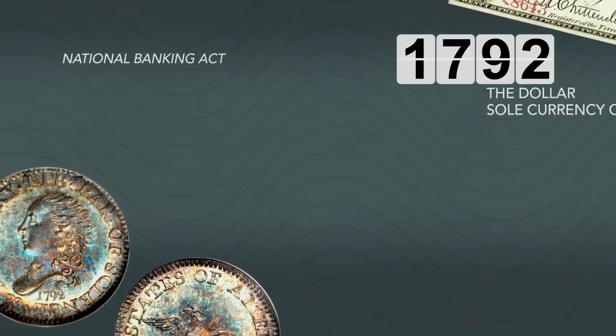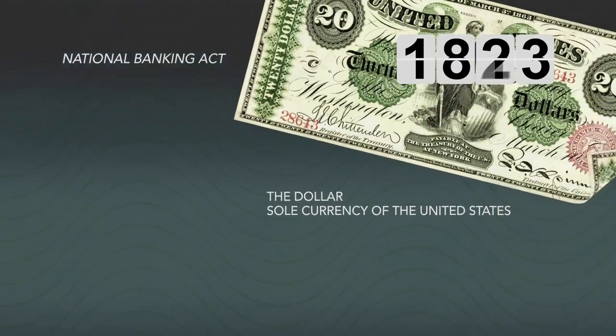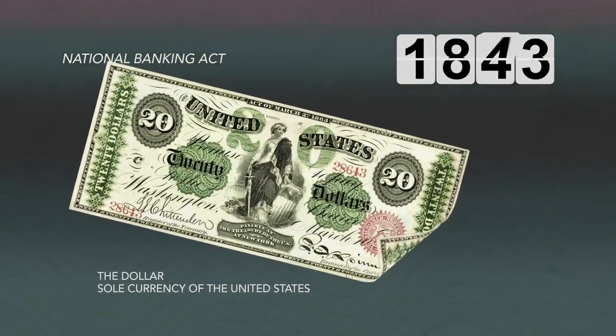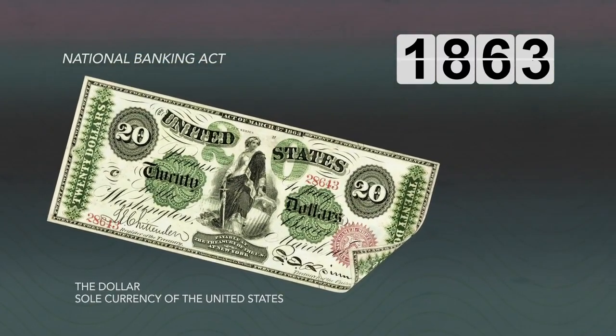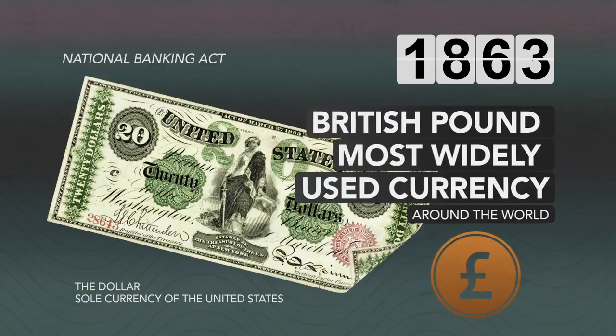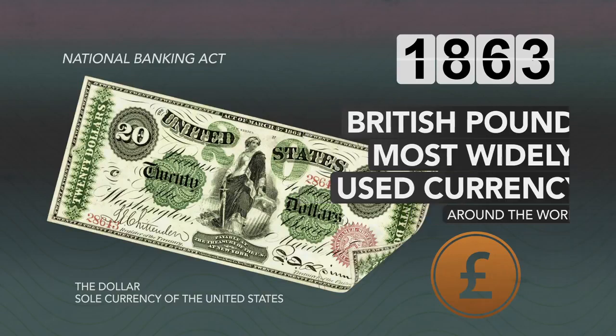But it was not until the National Banking Act of 1863, in the midst of the American Civil War, did the U.S. dollar become the sole currency of the United States. Despite the adoption of the new U.S. dollar, the British pound retained its status as the most widely used currency around the world until the end of the 19th century.